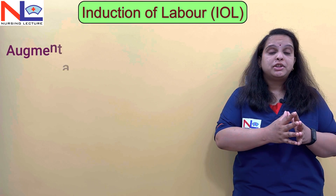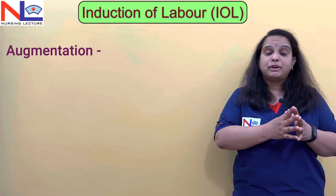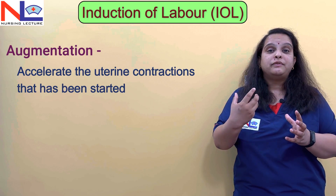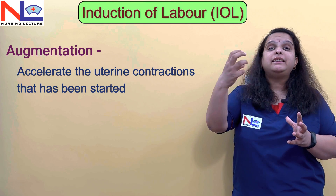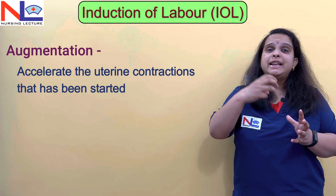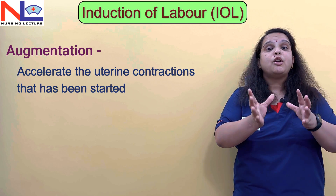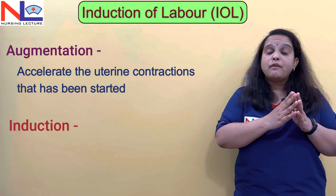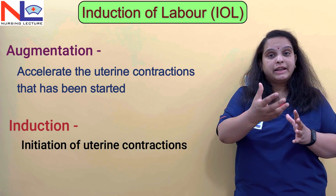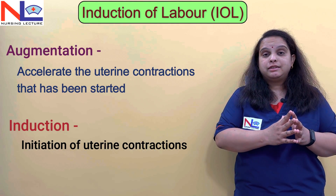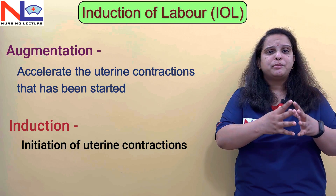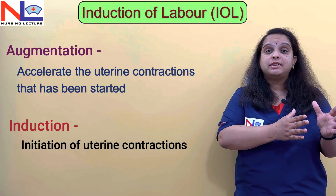There is one more term — augmentation of labor — which is quite different from induction. In augmentation, the labor process is already started but is not intense enough to deliver out the fetus. So in augmentation we accelerate the uterine contraction by giving some means. When the period of viability is exceeded and labor has not started yet, and we need to start uterine contractions, that is induction of labor. We use artificial means — medical or surgical methods — through which we can initiate the uterine contraction and terminate the pregnancy once it reaches the viability period.